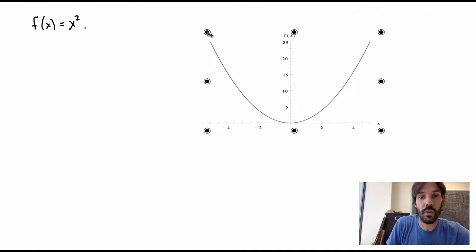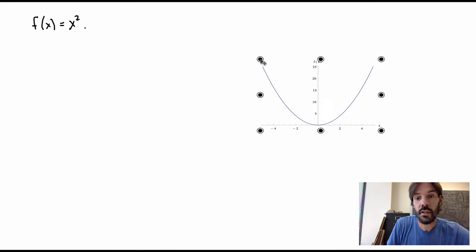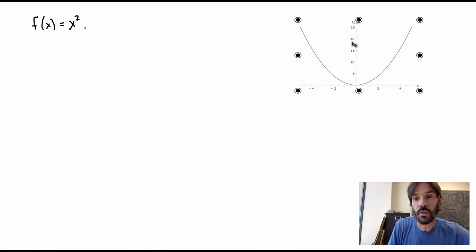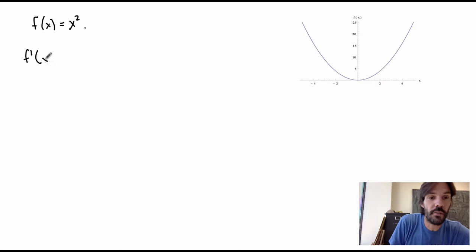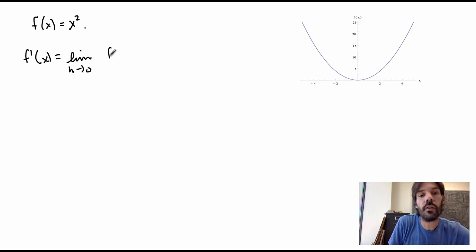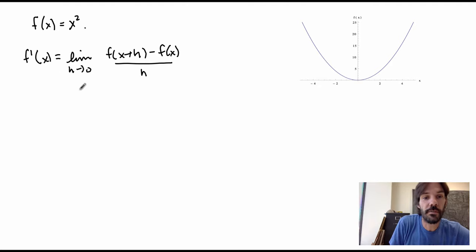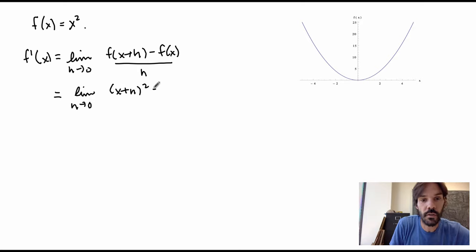First let's graph the function to know what we're looking at. We've seen this function already, so the graph looks like something like that. Now we want to calculate its derivative from the definition. So f'(x) is defined as the limit as h goes to zero of f(x+h) minus f(x) divided by h. We can replace the function here by the square function, so we get the limit as h goes to zero of (x+h)² minus x² divided by h.